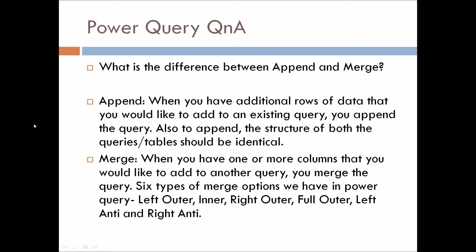The first question is: what is the difference between Append and Merge? Append is when you have additional rows of data that you would like to add to an existing query — you append that query. Append means union, the union of two tables. To perform an append, the structure of both queries or tables should be identical — meaning the number of columns, the names of the columns, and the data types should all be identical. Then only we can append the two queries.